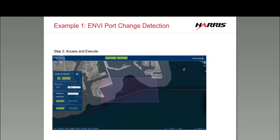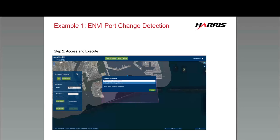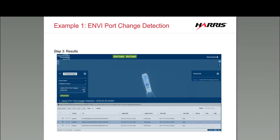Once those analytical workflows are exposed on the system, the user can log in, go to their area of interest, select an answer — in this case the Harris ENVY Port Change Detection algorithm — and run the workflow. The output at the bottom shows a list of vector output delineating the changes in the scenes selected for analysis, and the user can then get their answer off the platform.